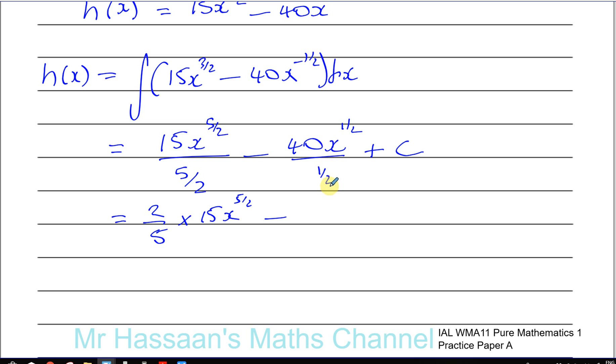And this is like minus 40 divided by a half, which is like 40 times 2, which is 80, times x to the power of a half plus C. And that is our h(x). And we just simplify that a little bit here. That cancels with that, leaving you with three. Two times three is six. You have 6x to the power of five over two minus 80x to the power of a half plus C.